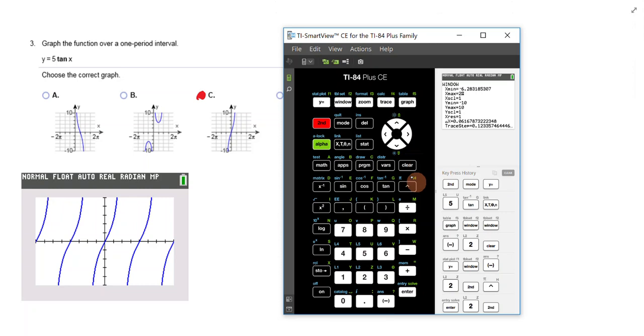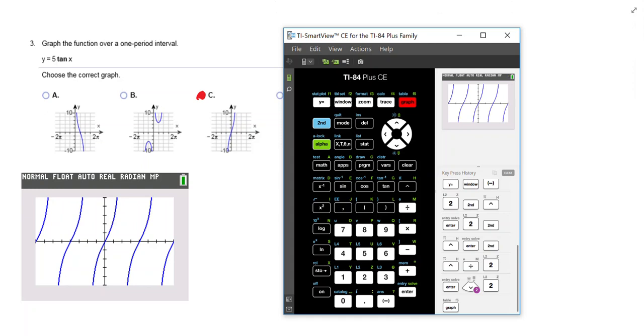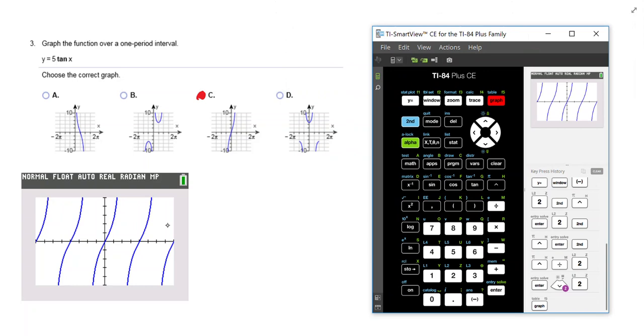And then we have 2 pi over here. The scale looks like it's going by pi over 2, so I could make my scale 2 pi divided by 2. The y min is at negative 10 and the y max is at 10, but the scale looks like is 2. You want to try to match your graph on your calculator to what you've got going on here. Then I hit graph. I got that picture. Now it's just wanting one period of it. That would be this one here in the middle, so c is what we're looking at.